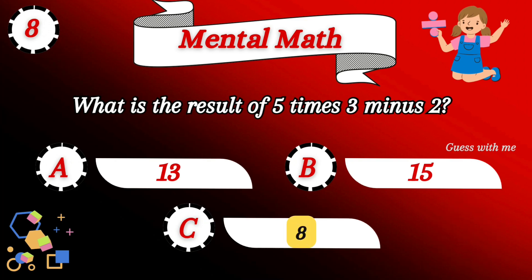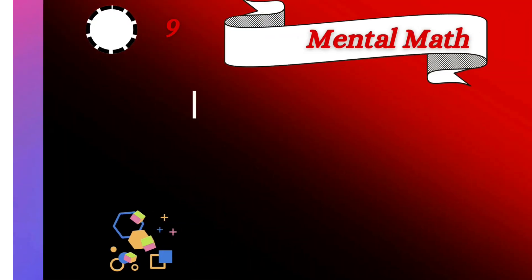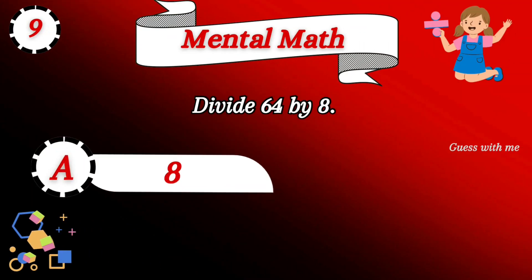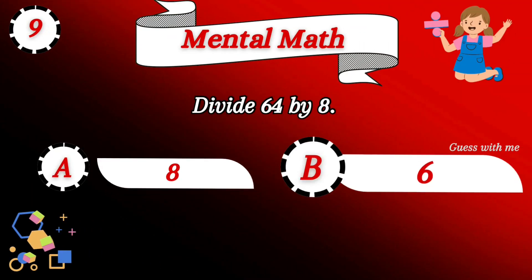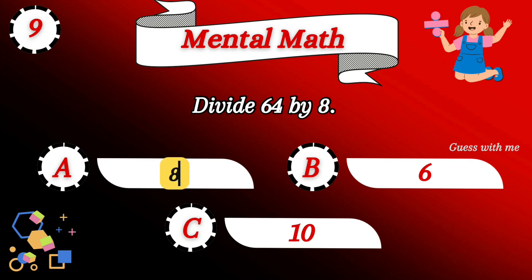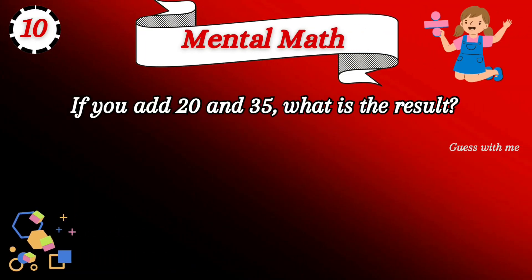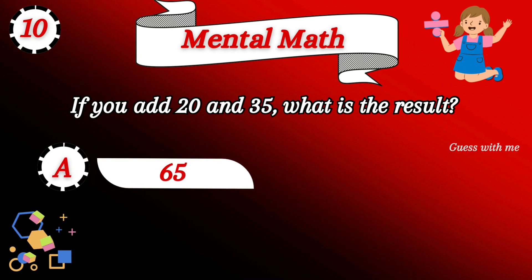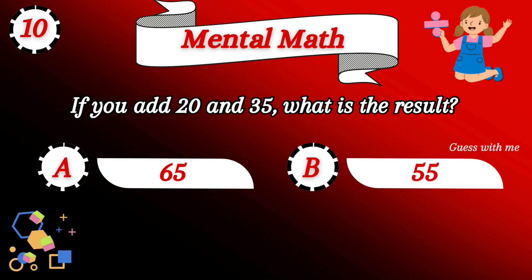What is the result of 5 times 3 minus 2? 8 is the right answer. Next question: divide 64 by 8. The answer is 8. Don't forget to count your score.